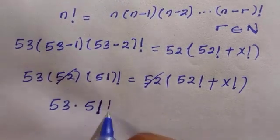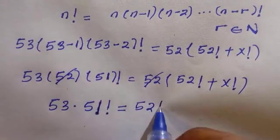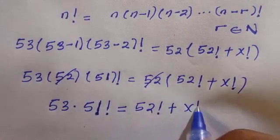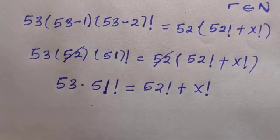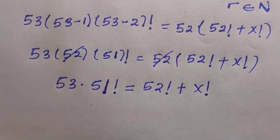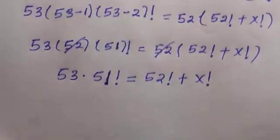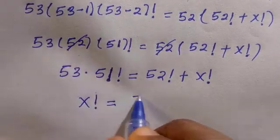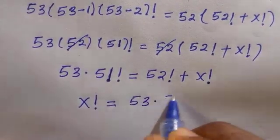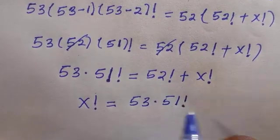We can't cancel anything here, so what to do is we make x factorial the subject of the relation, which is x factorial equals 53 times 51 factorial minus 52 factorial.